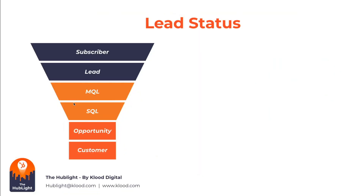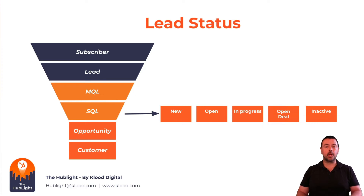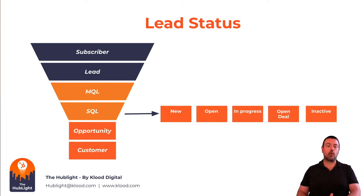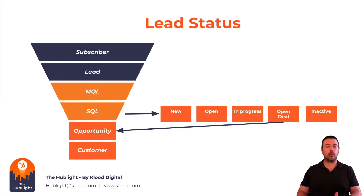Now let's look at lead status. The lead status is a property on the contact record and you can customise the values to suit you. Generally speaking, lead statuses should be used to monitor and plan what is happening with your SQLs. For example, when you have a new SQL you can change the lead status to 'New' or 'To Be Researched'. Once your salesperson is engaged and a deal record is created, you can move the lead status to 'Open Deal' and then use the deal record to progress the opportunity.